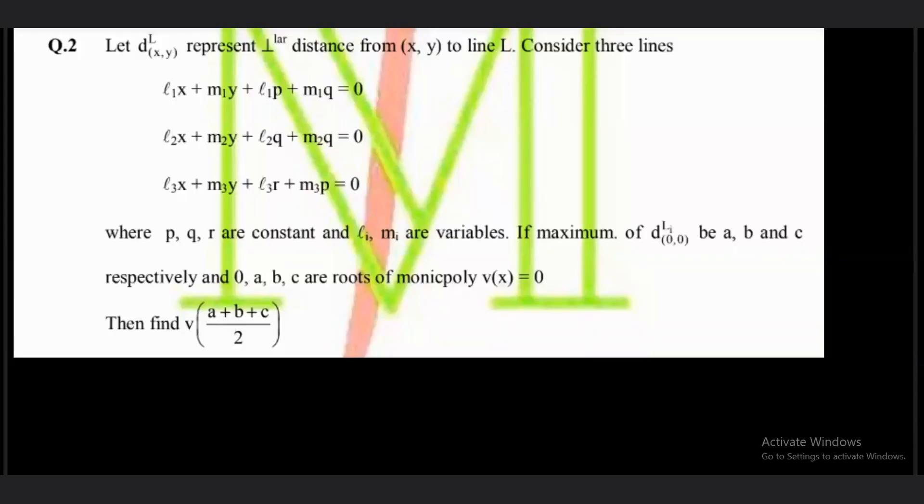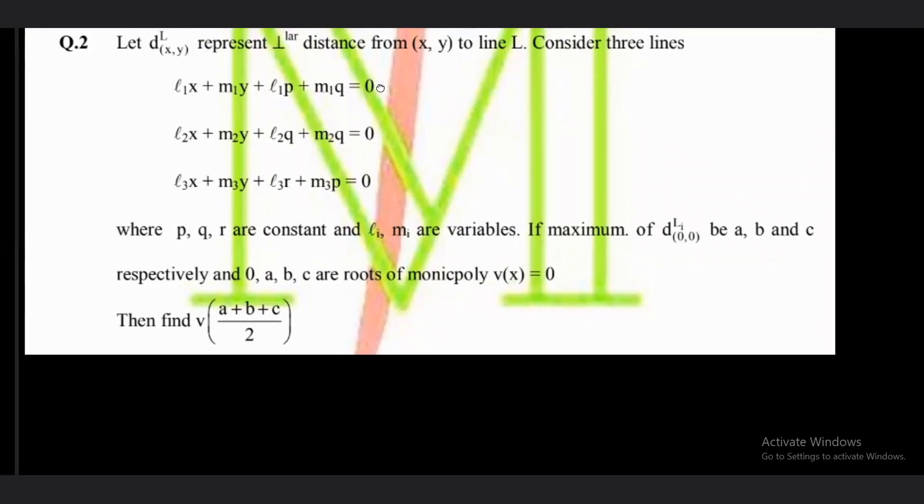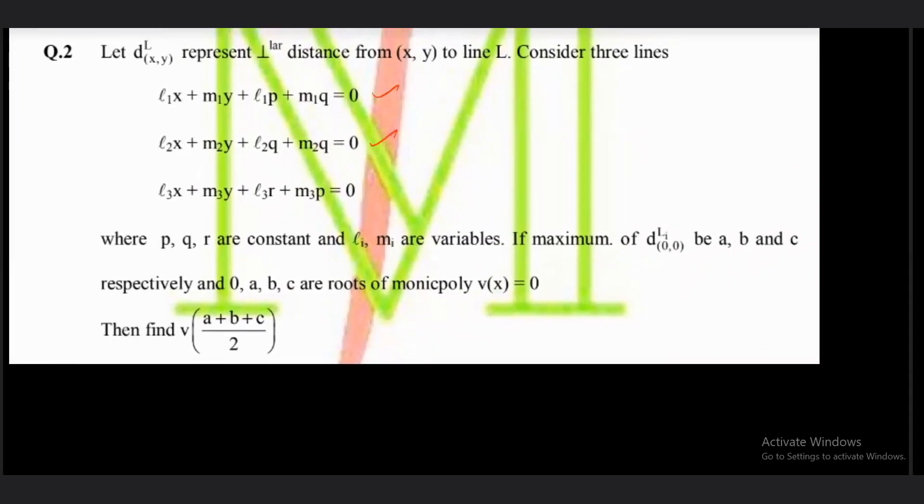The question reads as: distance d_xy or d(x,y) represents perpendicular distance from (x, y) to line l. Consider 3 lines. The first line is l₁x + m₁y + l₁p + m₁q = 0. The second line is l₂x + m₂y - l₂q + m₂r = 0. And the third line is l₃x + m₃y + l₃r + m₃p = 0.